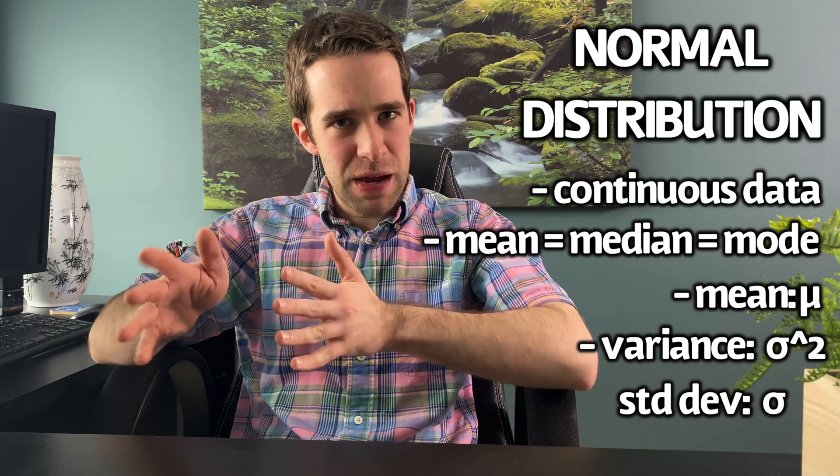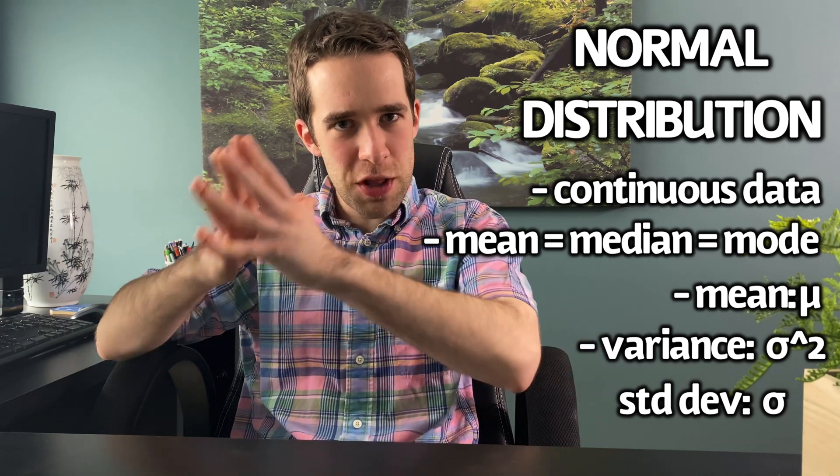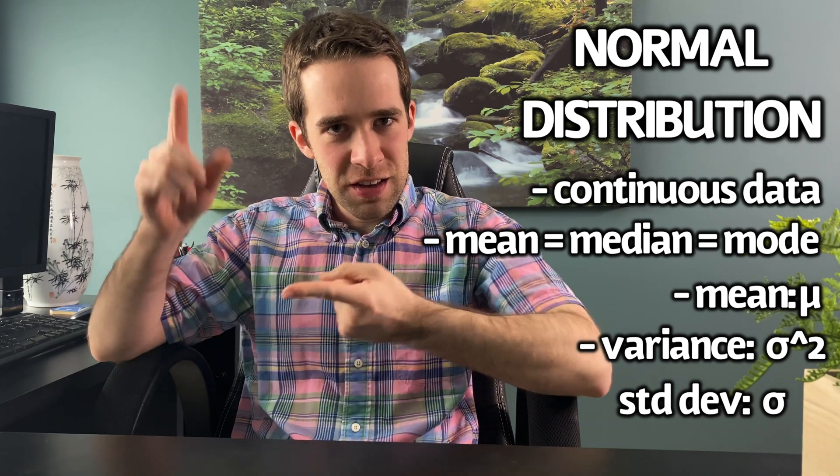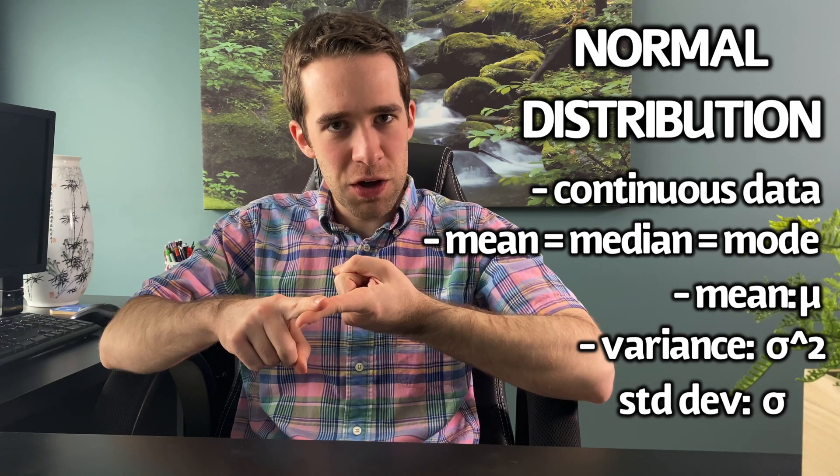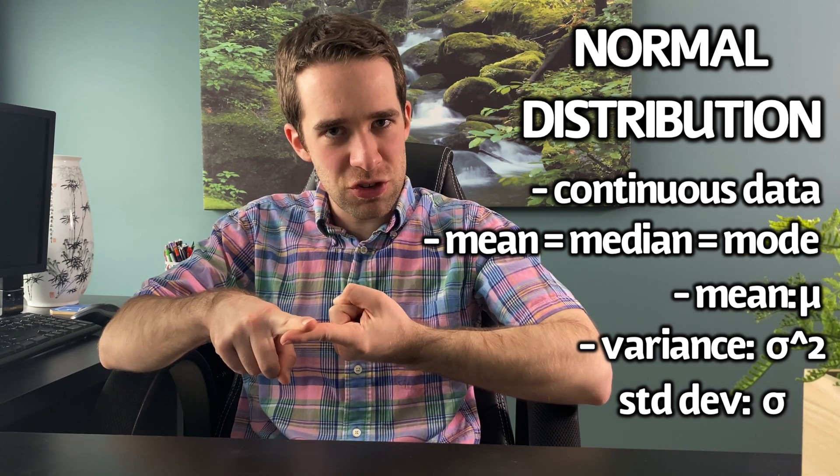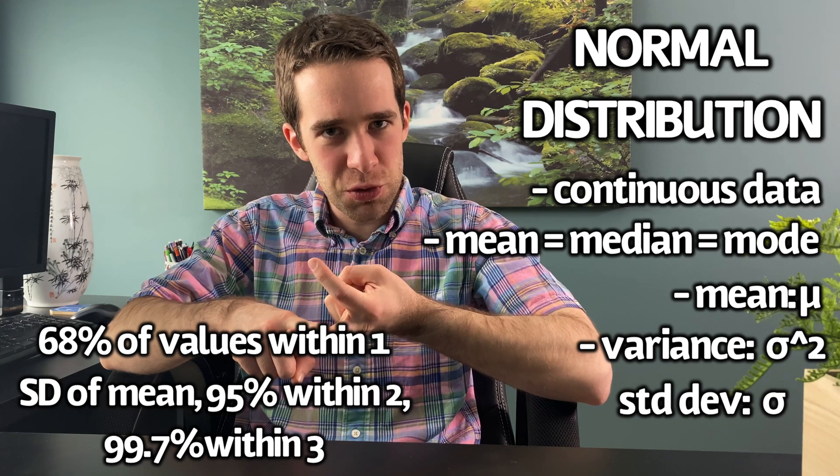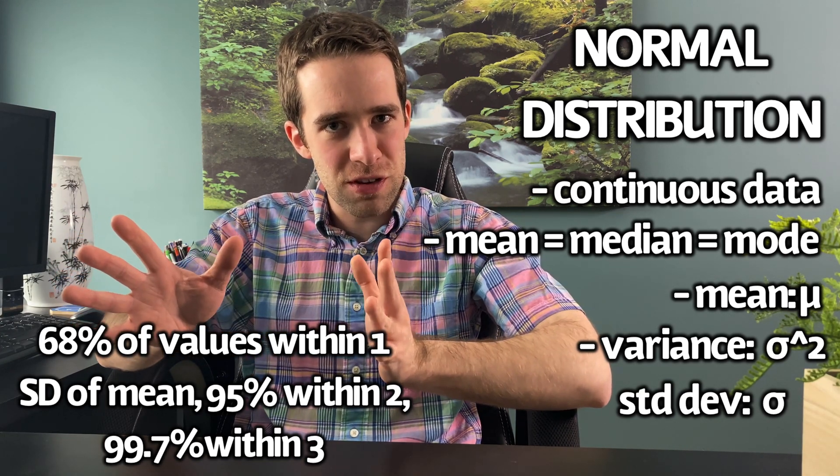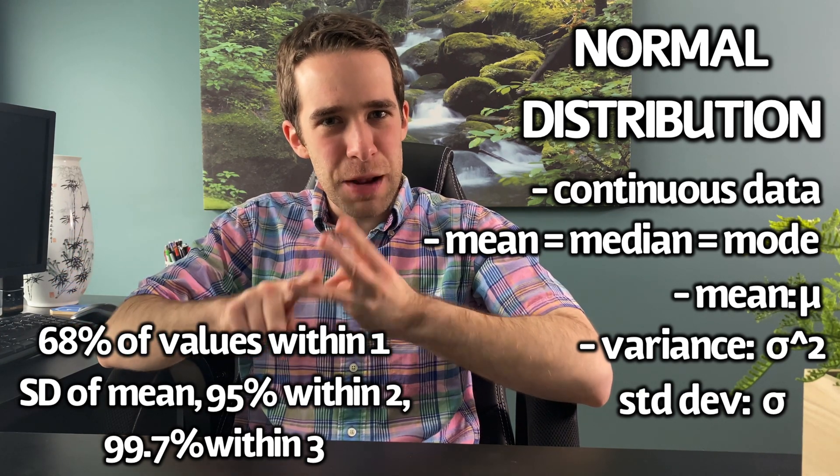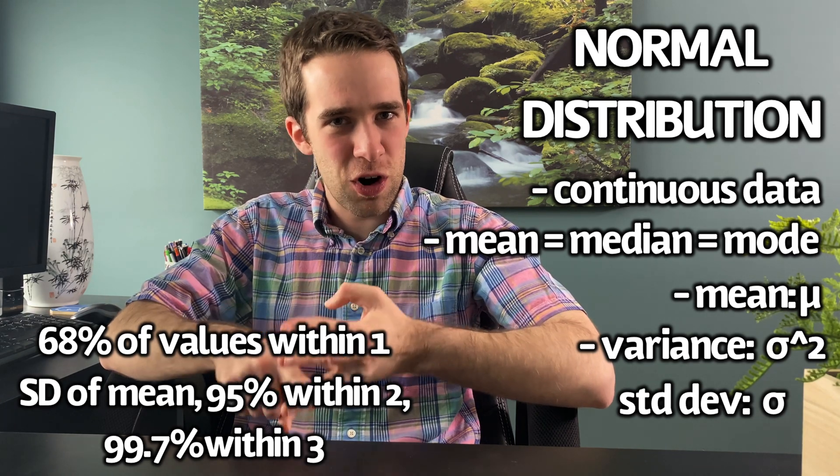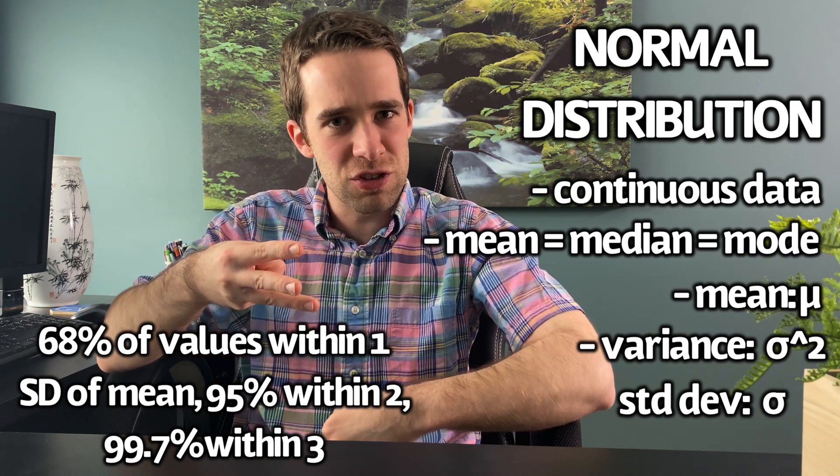Then there's what's known as the empirical rule, which says that when you have a normal distribution, 68% of your values are within one standard deviation of the mean, 95% of values are within two standard deviations of the mean, and then 99.7% of values are within three standard deviations of the mean.